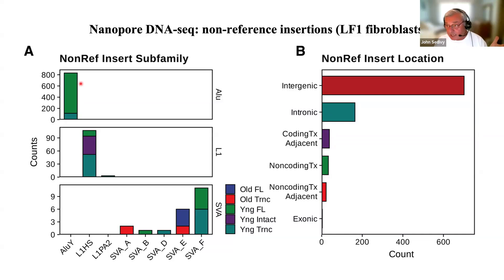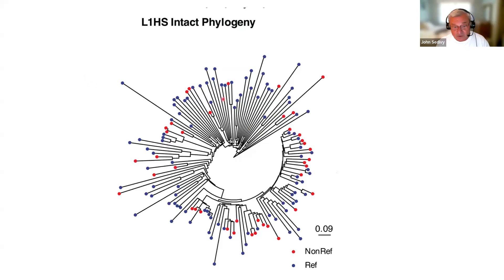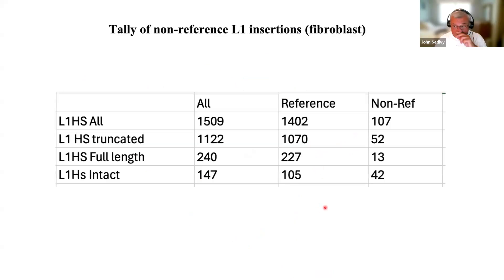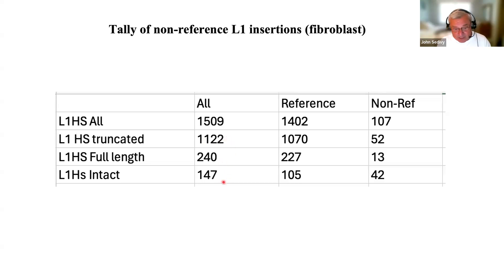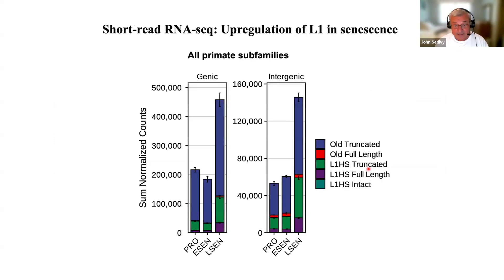With nanopore DNA sequencing at 30-fold coverage, we can map every element in every genome. This fibroblast cell line we are working with has about 100 LINE-1s, of which the purple ones are still intact. Alu is much worse because it's tiny and uses the RT from LINE-1, and this genome has 800 polymorphic Alu elements. This is very important to know, because prior to being able to do this, you'd have RNA-seq data but wouldn't know where it's coming from since you don't know many of the source elements. This shows the phylogeny of 147 intact elements in this particular genome — the oldest ones are mostly reference, and as you get younger, the red ones are polymorphic.